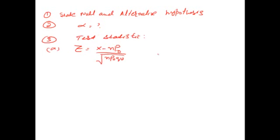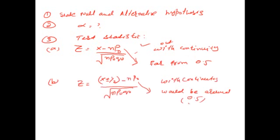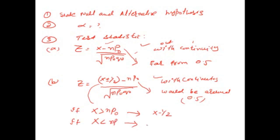There are two cases: without continuity correction (when p-naught is far from 0.5), and with continuity correction (when p-naught is close to 0.5). When x is greater than n times p-naught, we use (x minus 1/2), and when x is less than n times p-naught, we use (x plus 1/2).